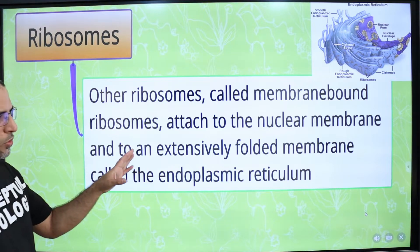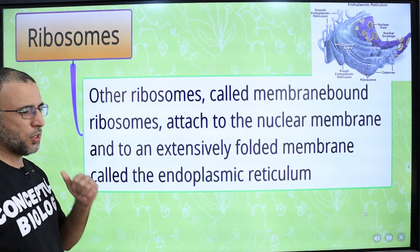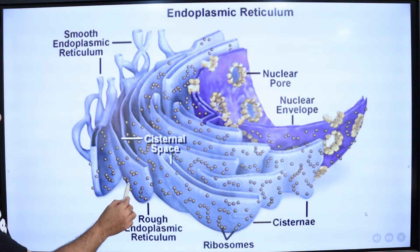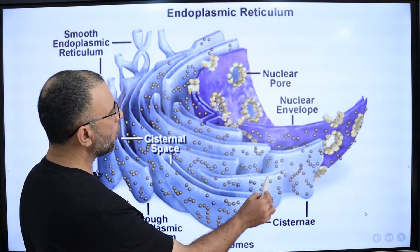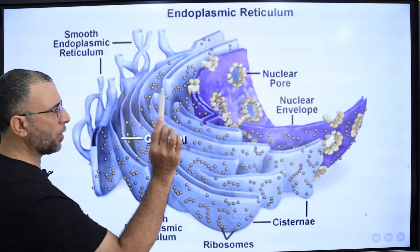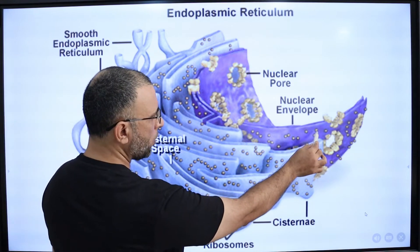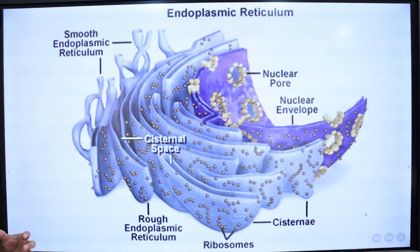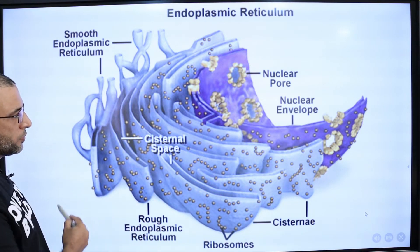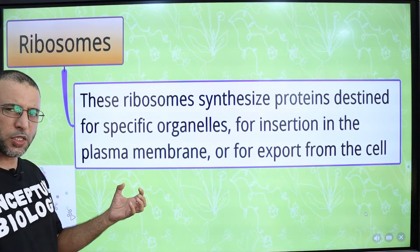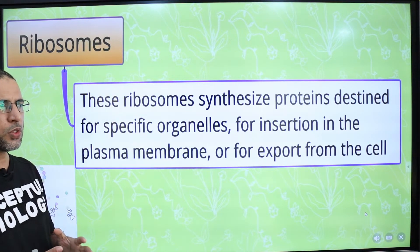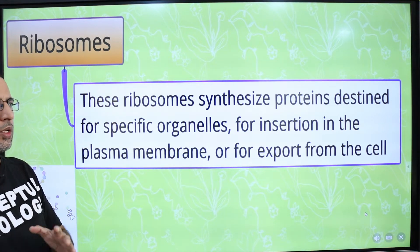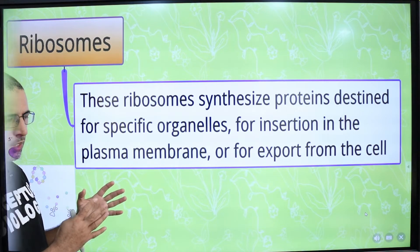Membrane-bound ribosomes are attached to the endoplasmic reticulum as well as the nuclear membrane. Ribosomes attached to the endoplasmic reticulum are involved in the synthesis of protein that is used as a structural component of cell membranes.